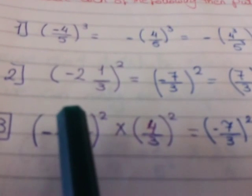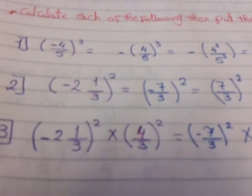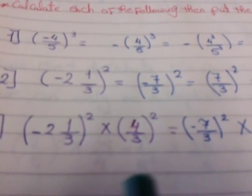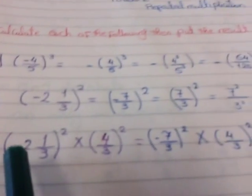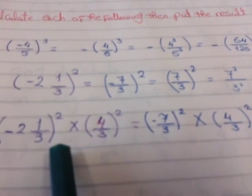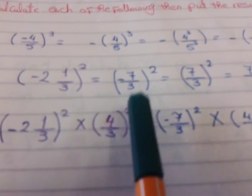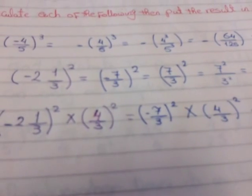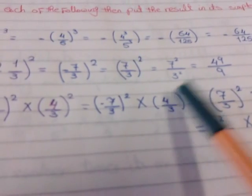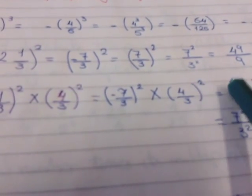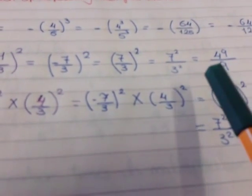Number 2: negative 2 and 1 over 3, all to the power 2. Here the power is even, so it eats the negative sign. 2 and 1 over 3 gives me 7 over 3. Then I will distribute the power 2 for 7 and 3: 7 power 2 equals 49 and 3 power 2 equals 9. So 49 over 9 — this is already in simplest form.